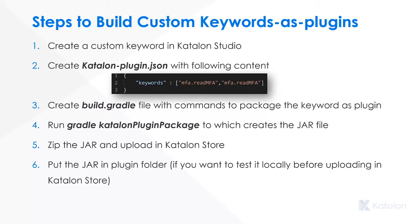The mfa.readmfa is going to be packaged up as a keyword within the Katalon Studio plugin. Then we need to create a build.gradle file with the commands to package this keyword as a plugin. Once the build.gradle file is ready, you need to run the gradle Katalon plugin package command which creates a jar file. Since the stores don't accept jar files, you need to zip it up and upload it into the Katalon store.